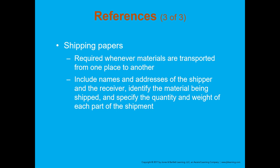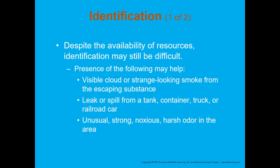Despite the availability of resources, identification may still be difficult. The presence of the following may help: a visible cloud or strange looking smoke from the escaping substance, a leak or spill from a tank, or an unusual, strong, or noxious odor in the area. If you see any of those things — visible cloud, substance leaks, or unusual odor — just treat it as a hazardous material until proven otherwise. If any signs suggest a hazmat incident has occurred, stop at a safe distance, park upwind and uphill from the incident, call for a hazmat team, try to assess the situation and see if you can see any placards from a safe distance. Most vehicles carry binoculars so you can look at a distance. Do not re-enter the scene, do not leave the area until cleared, and avoid all contact with the material itself.